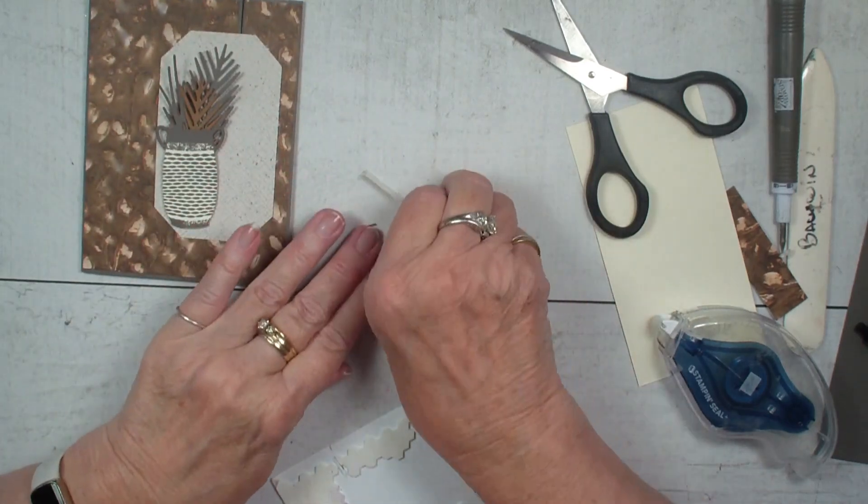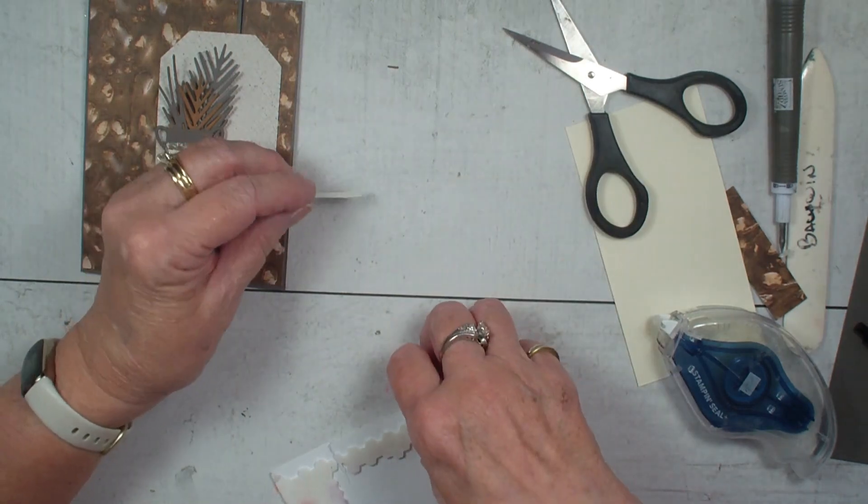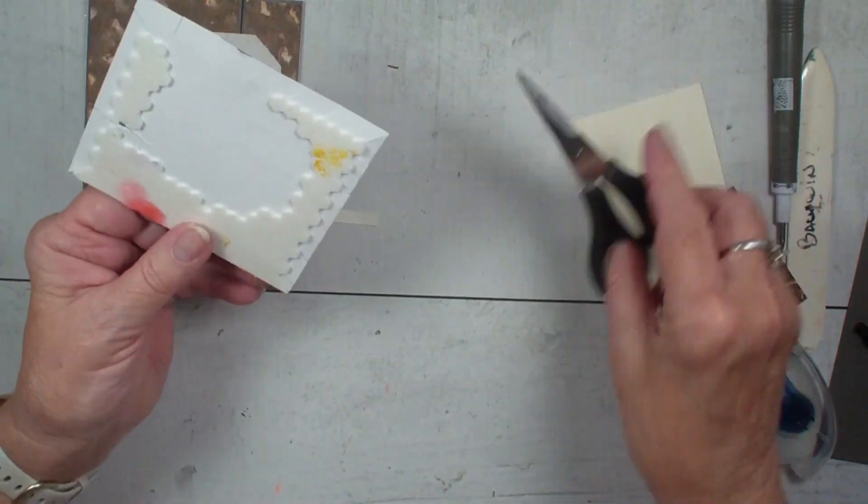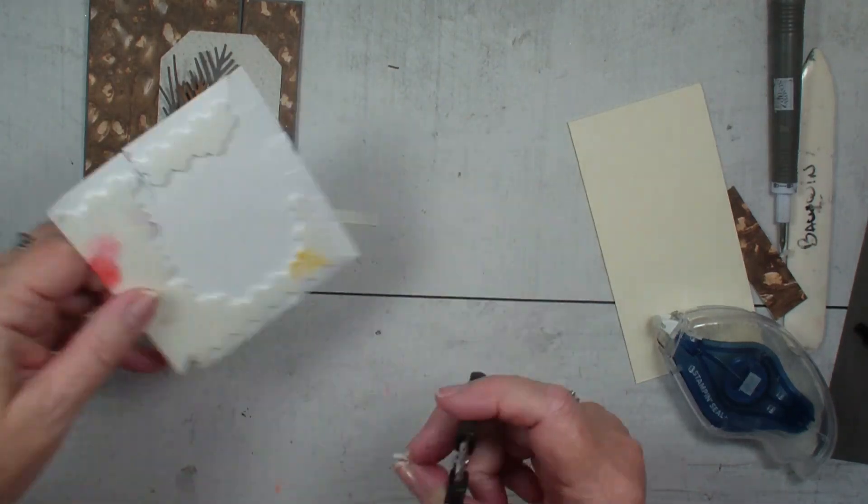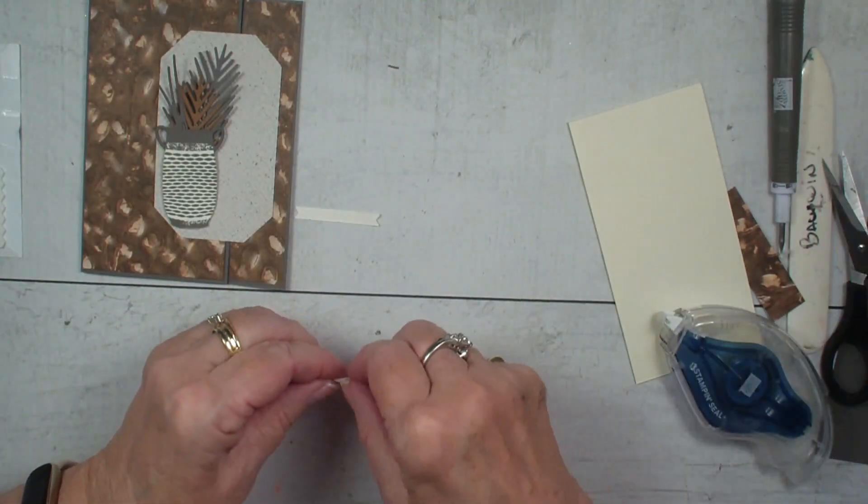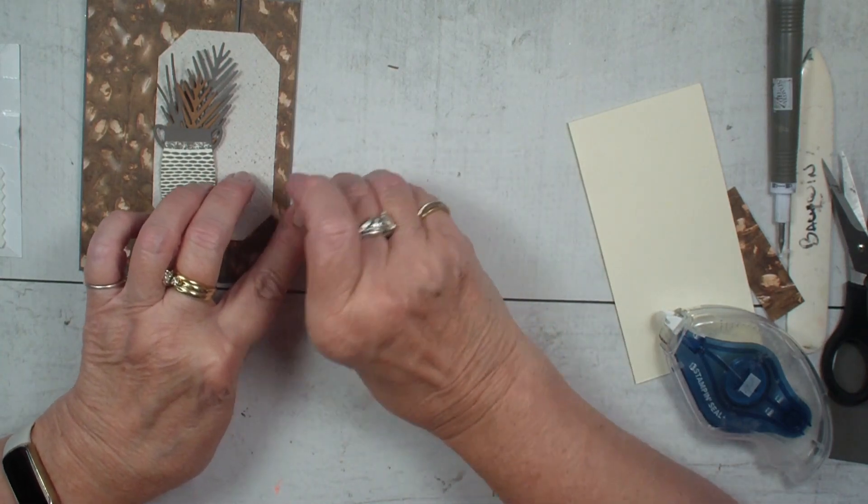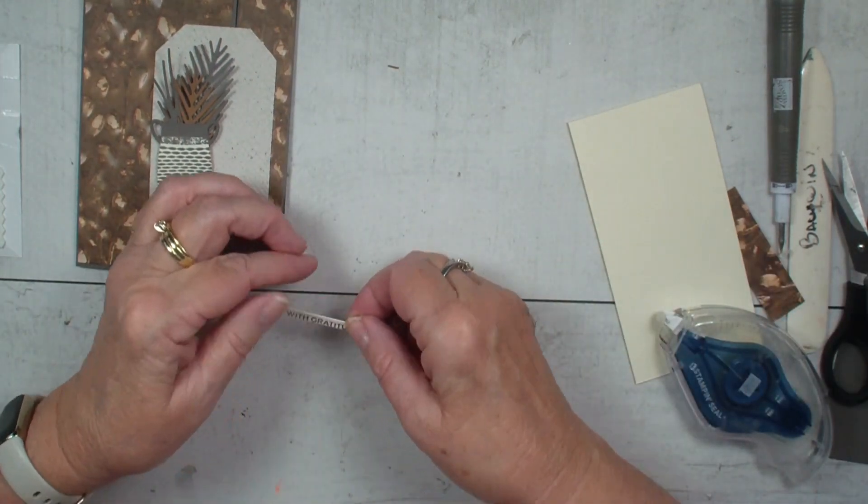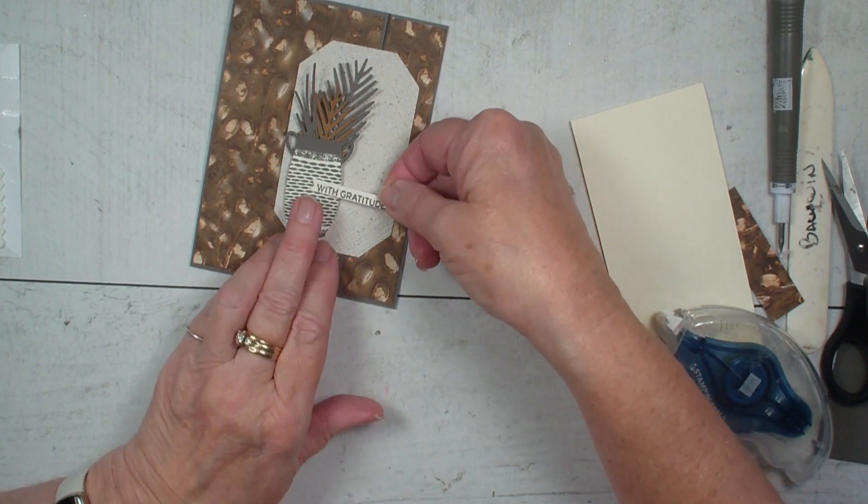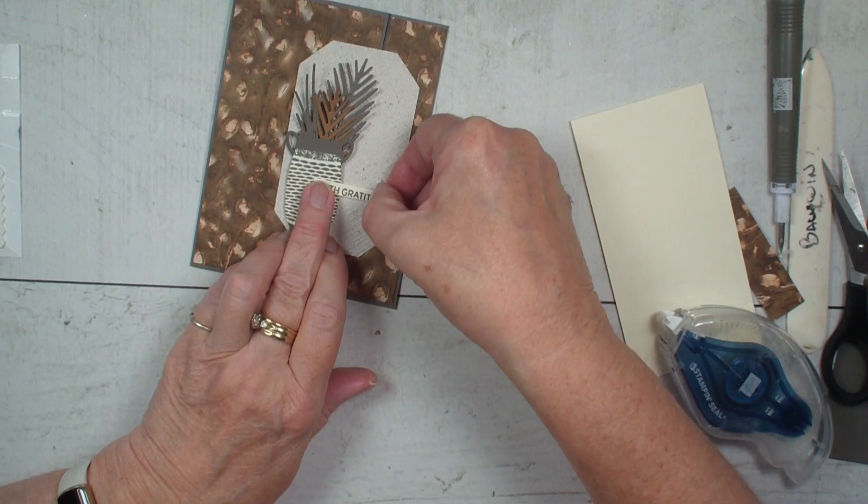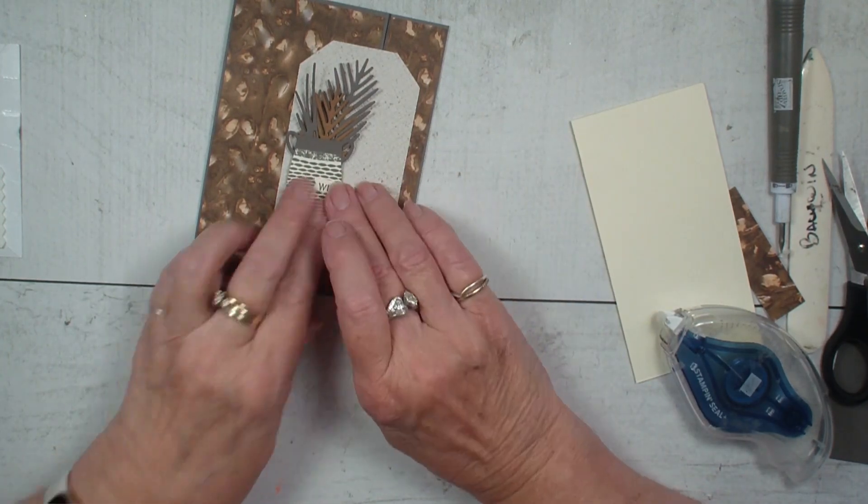I have taken this is also from that countryside corners dies and I'm just going to cut out just a little sliver of the dimensional. I have used the greeting with gratitude again with that pebbled path ink. We're going to just add that to the front of my card like so.